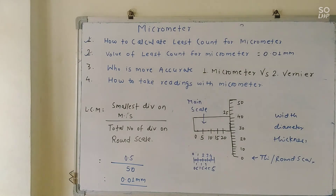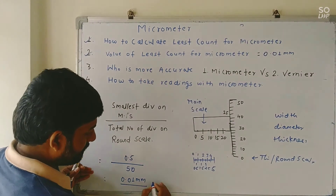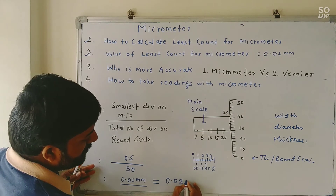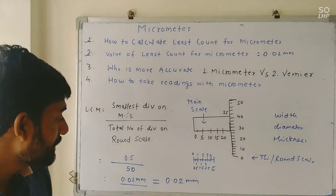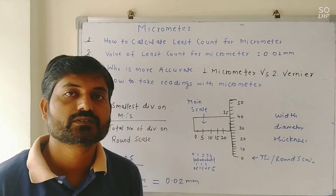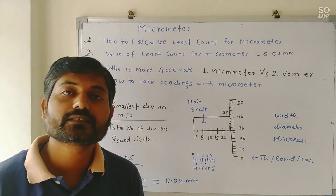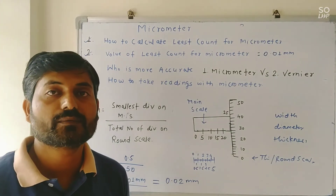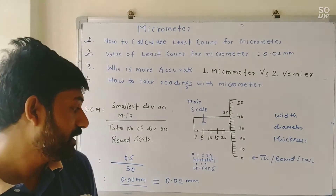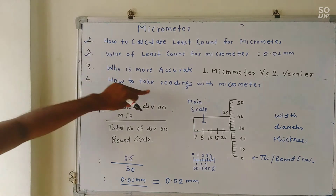Who is more accurate — micrometer or vernier caliper? For vernier caliper the least count is 0.02 mm, so we can measure up to 0.02 mm with vernier caliper. But with a micrometer we can measure up to 0.01 mm. For example, if I want to measure 11.19, that can be measured with a micrometer but not with vernier caliper, because vernier caliper can only measure 11.18 or 11.20. That is why vernier caliper is less accurate than micrometer — micrometer is more accurate.